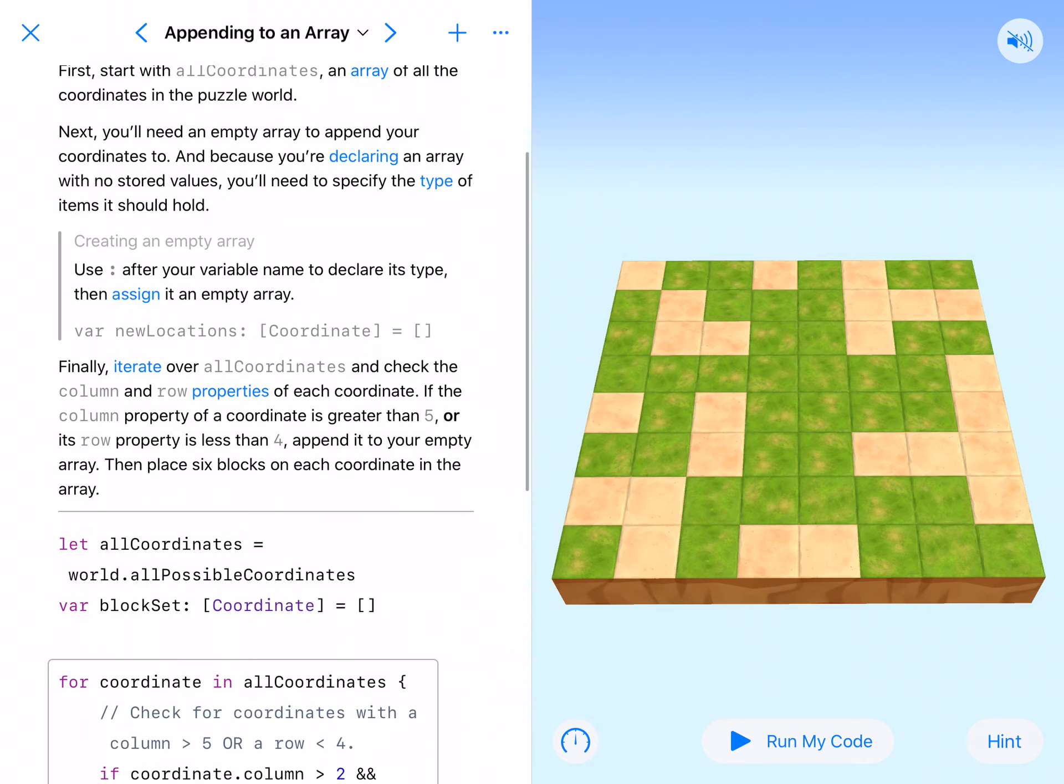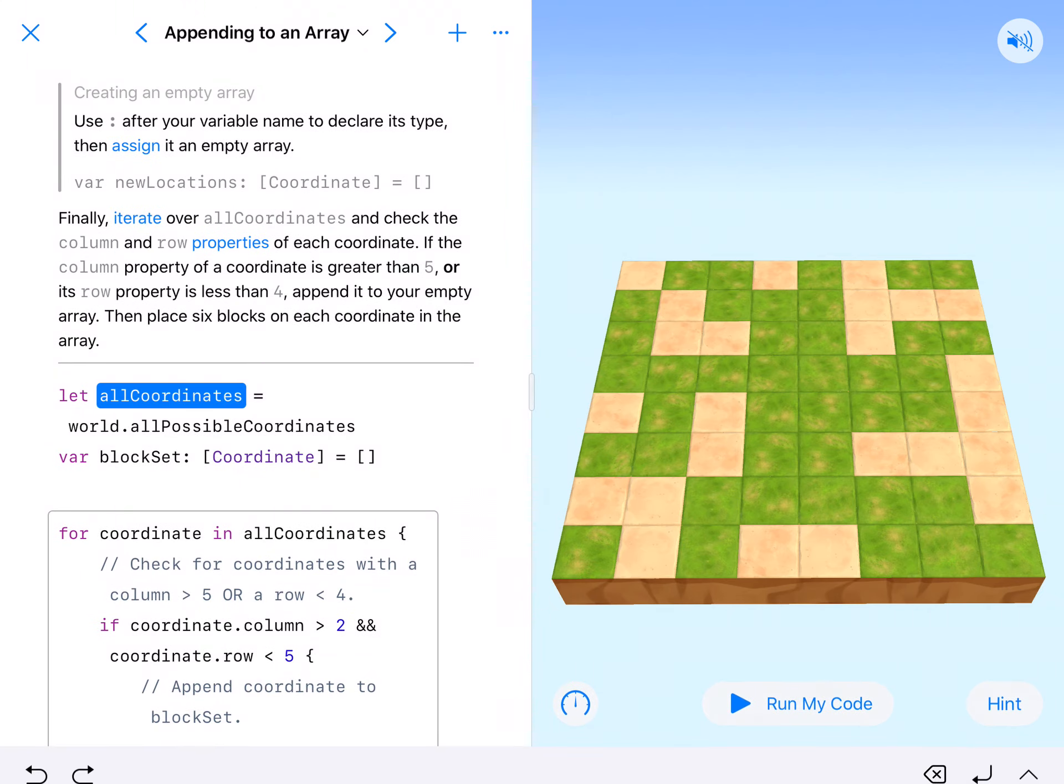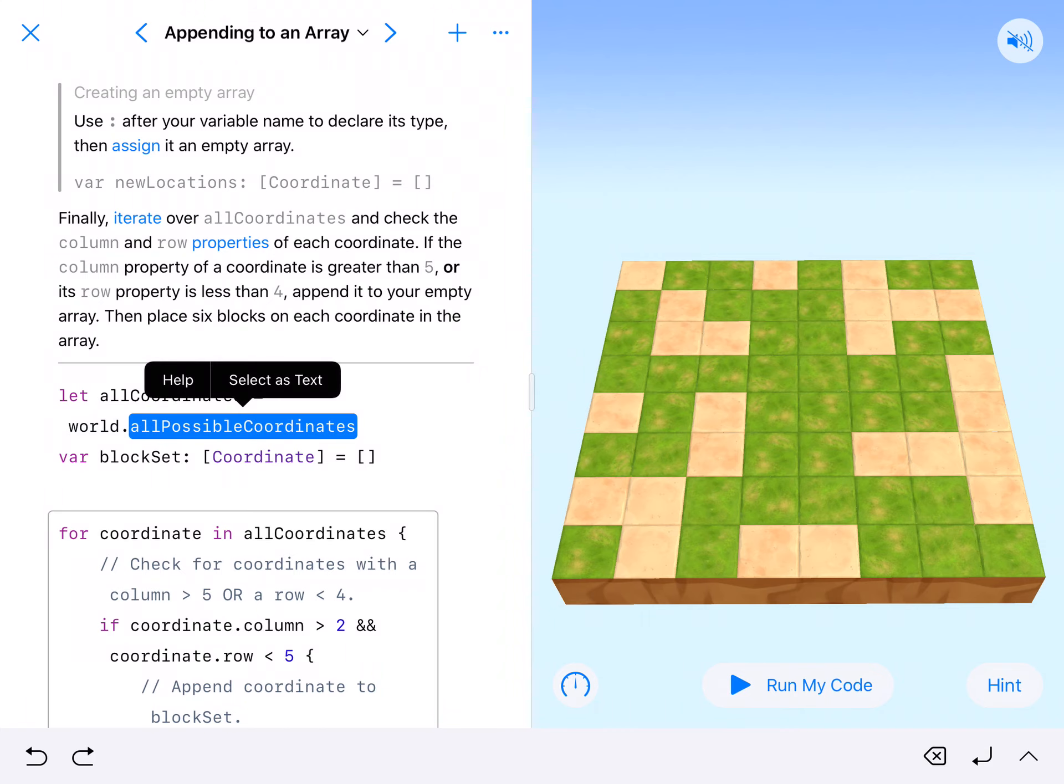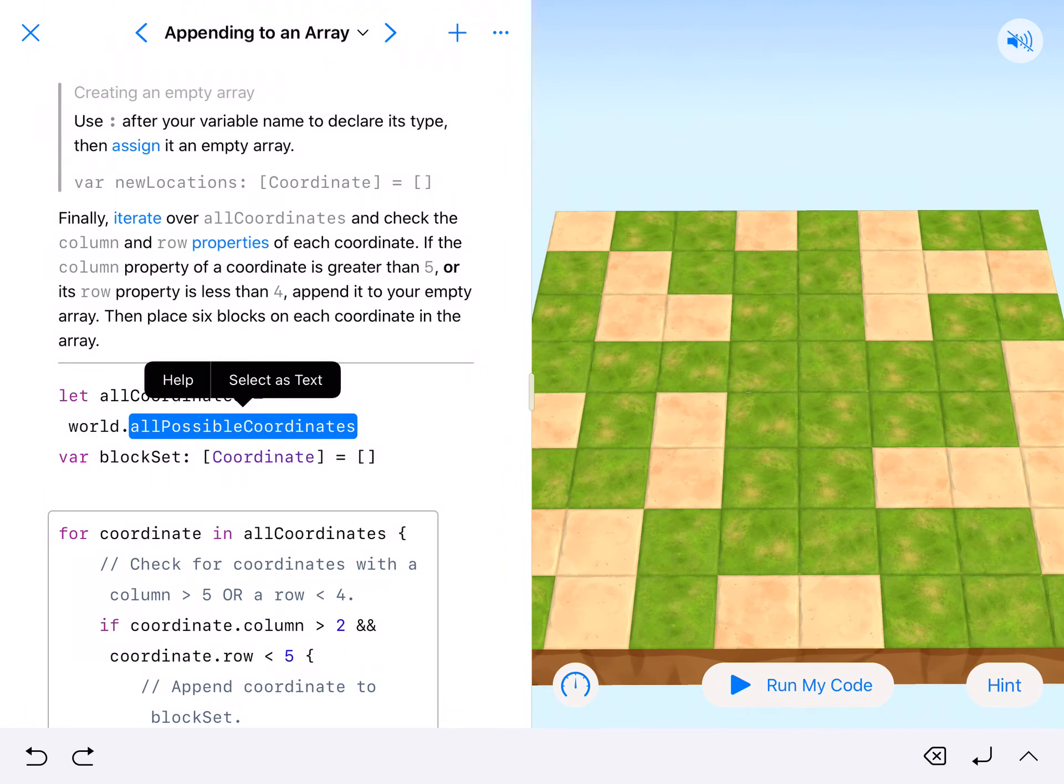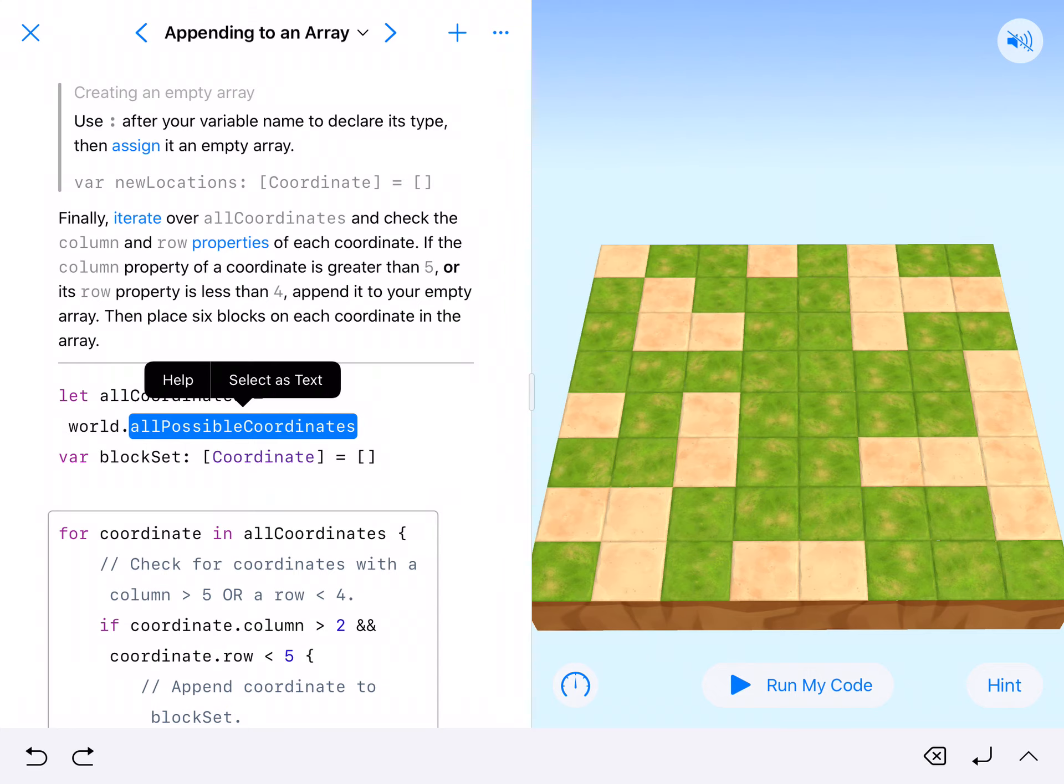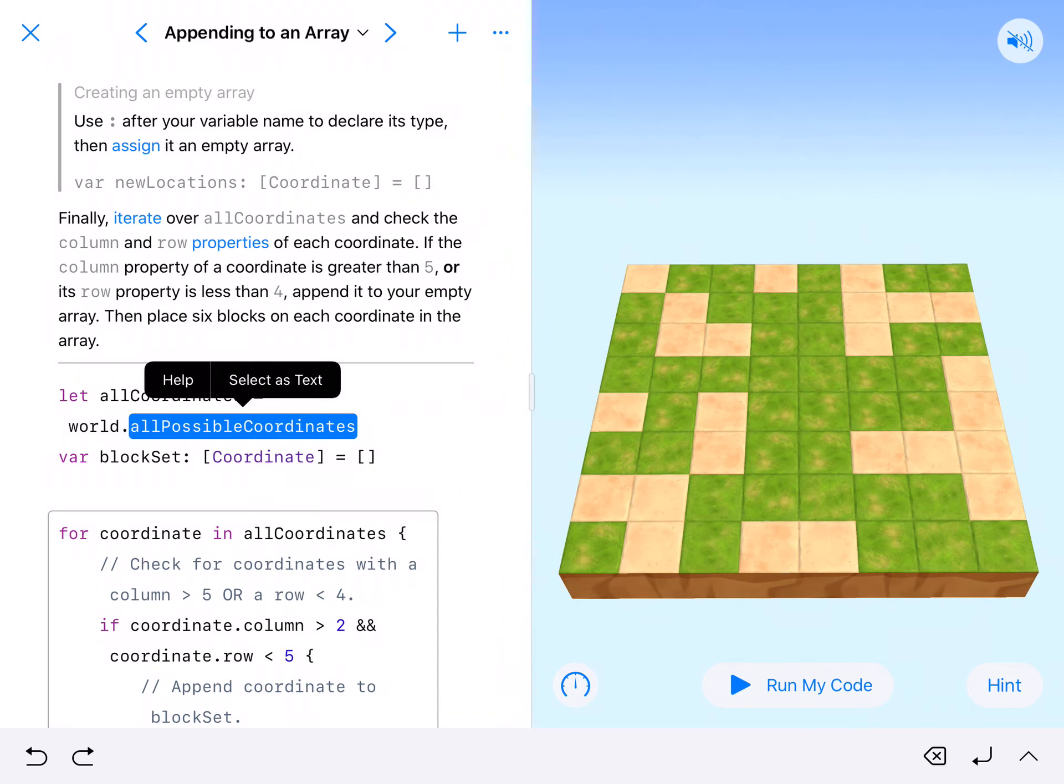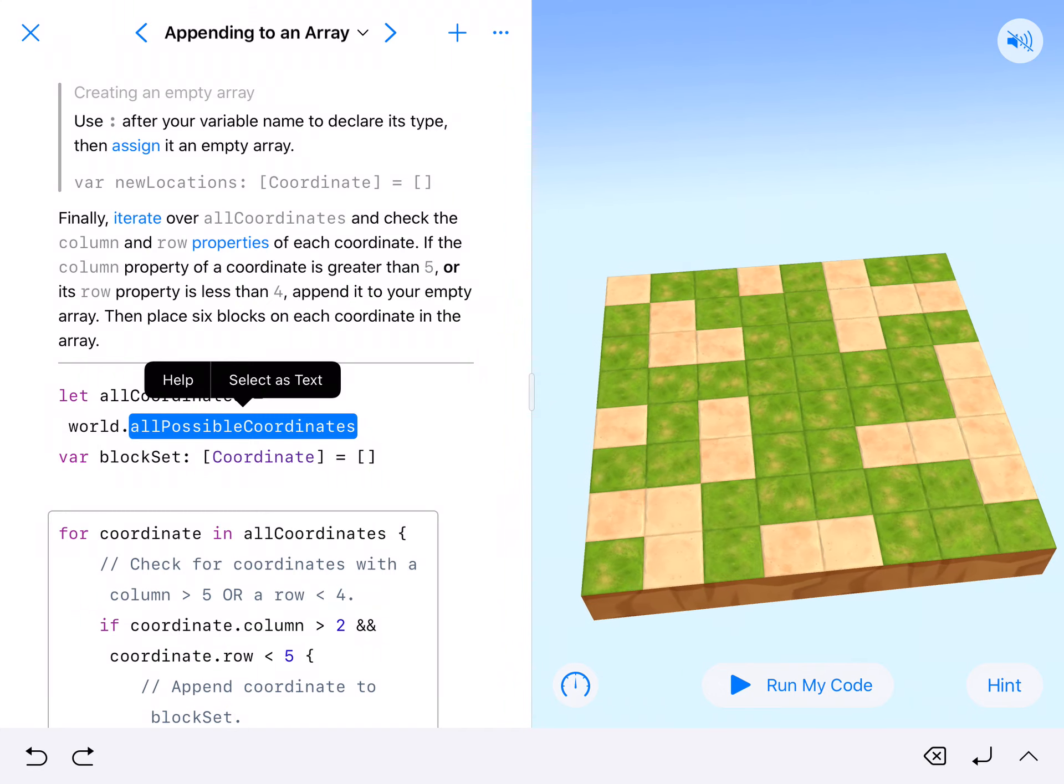So we have this new thing, let all coordinates equal world dot all possible coordinates. And so what this is going to do is allow us to use this code on multiple sized maps. So this is an eight by eight map.